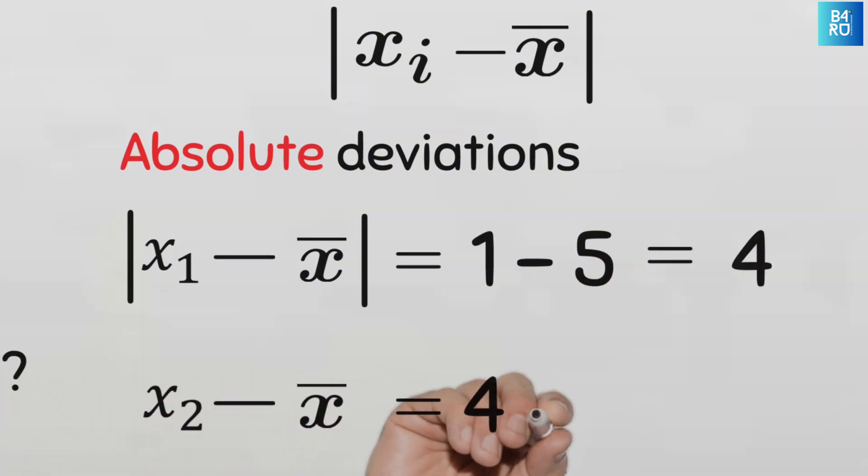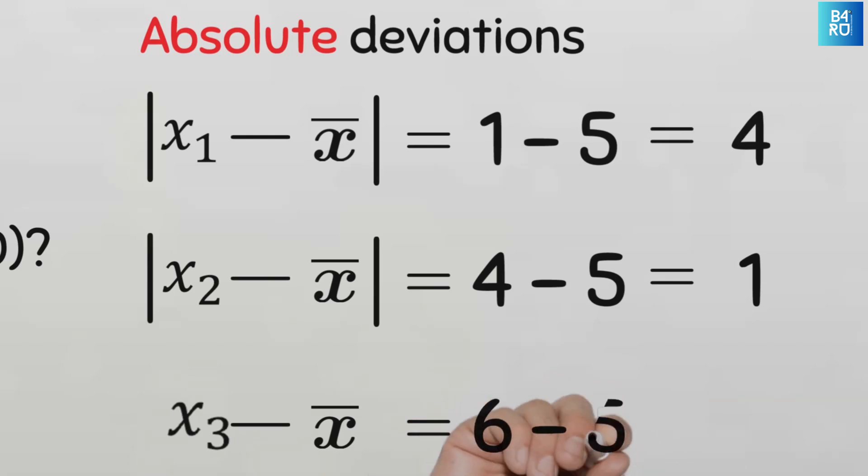Then for x2, it will be 4 minus 5. That's minus 1. And so the absolute value is 1. Then for x3, we will have 6 minus 5, and that will give 1, and the absolute value will be 1.